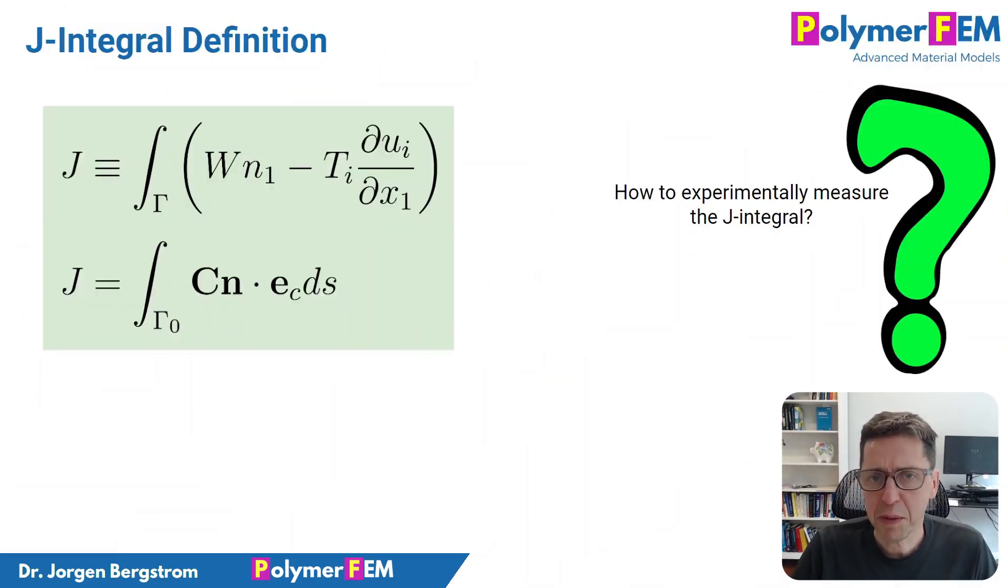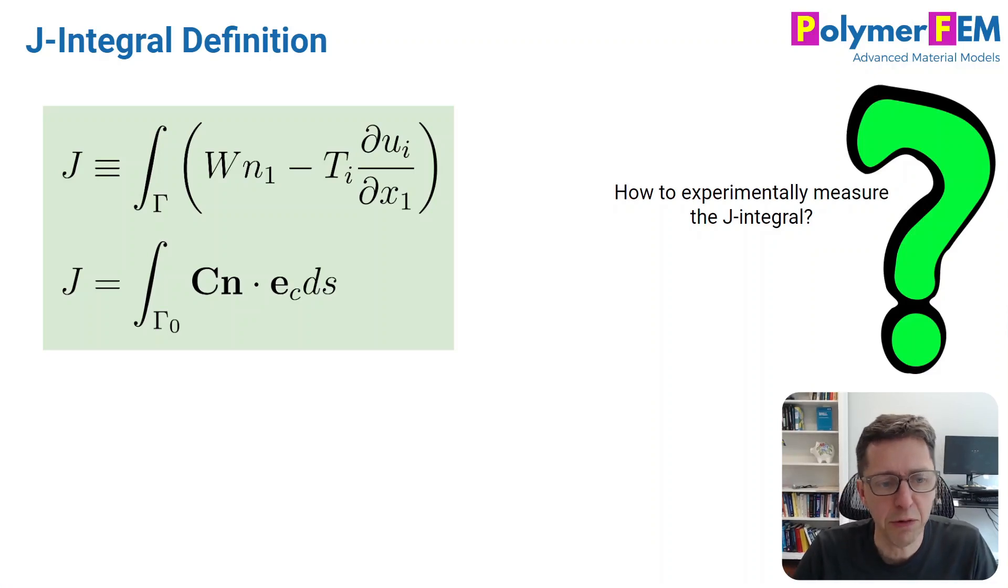If you remember from my last video, I introduced the definition of the J-integral and wrote down a number of different ways to define it according to theory. Here are two of the ways that I like the most. The first one is the classical approach from Rice, and the next one is a tensorial approach that I think is clearer and cleaner.